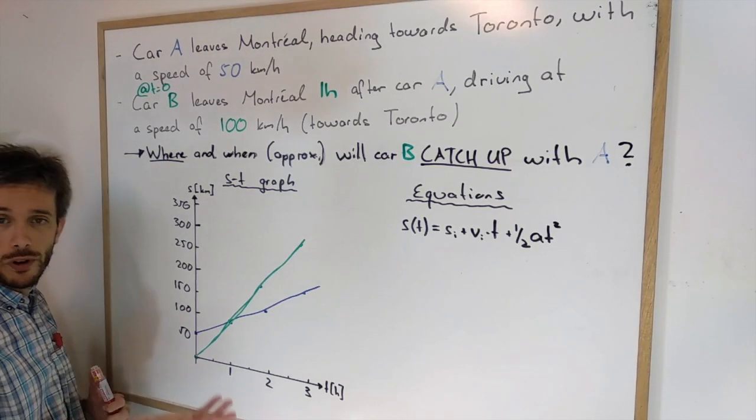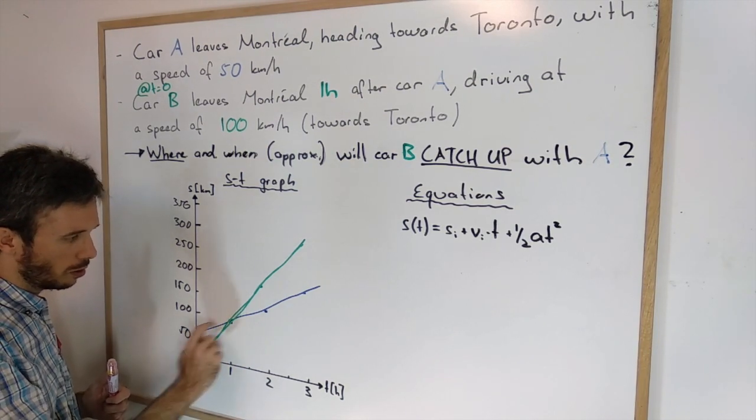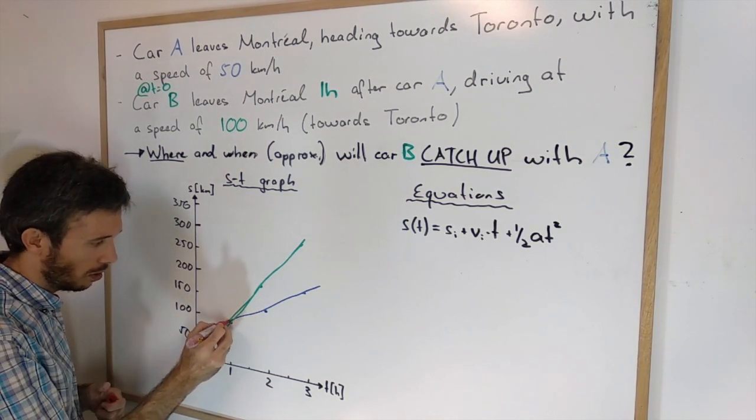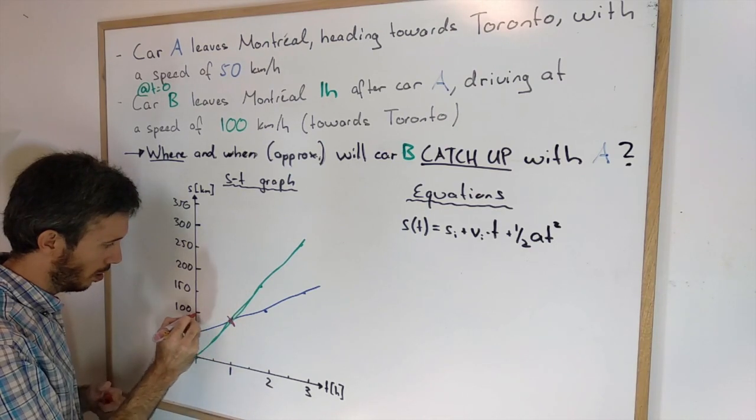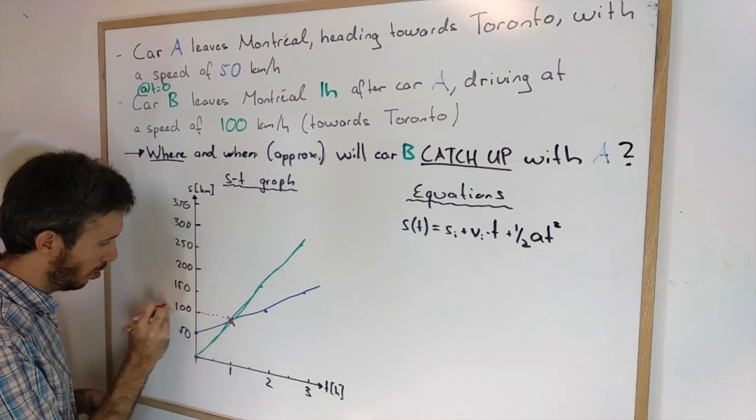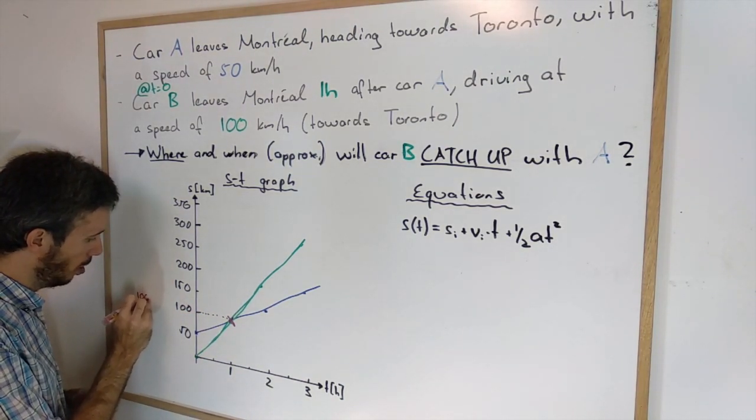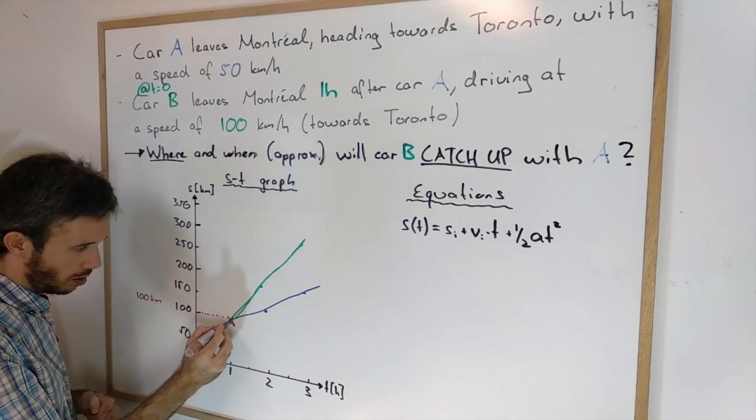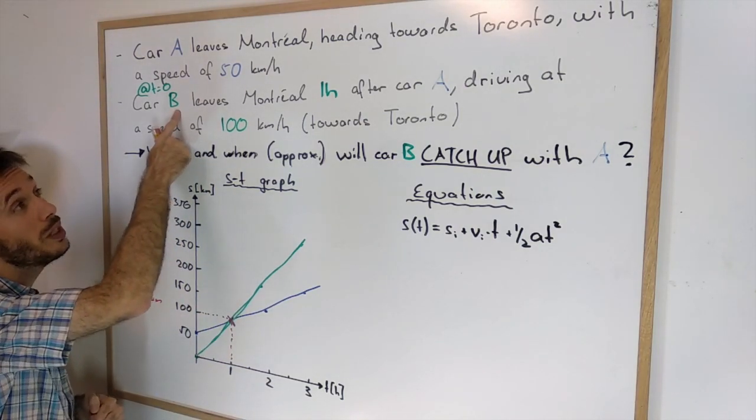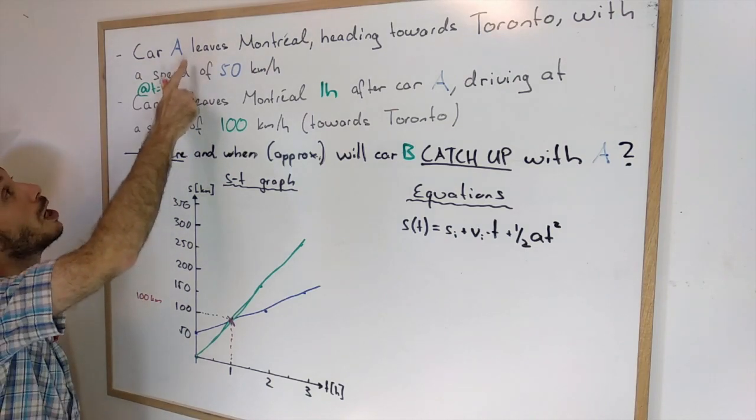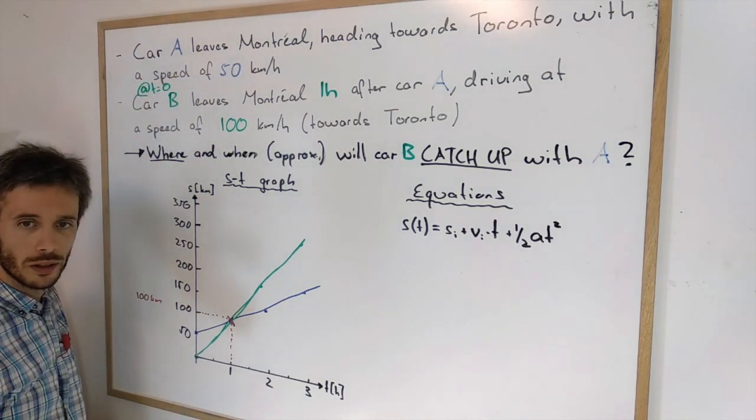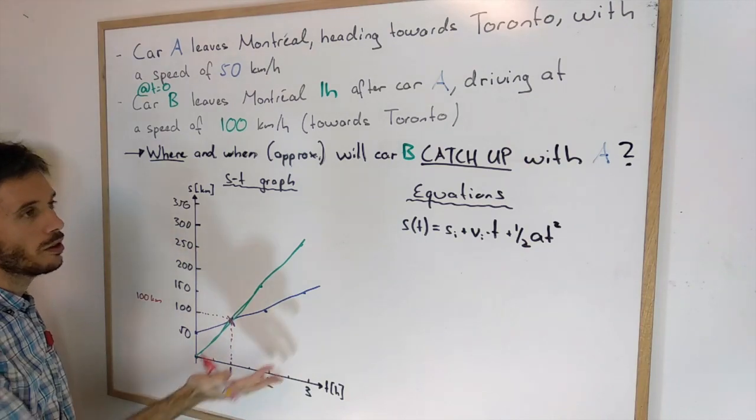When and where do they meet? Well I think it's pretty obvious, that's when the two lines cross. So here is where they meet, 100 km outside of Montreal, and one hour after B left Montreal, so two hours after A left Montreal. So we found the solution from the graph.